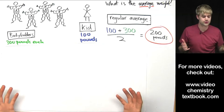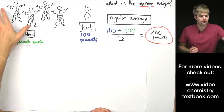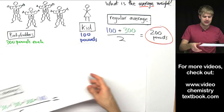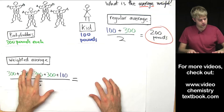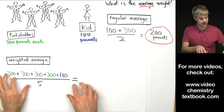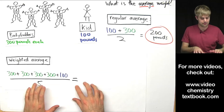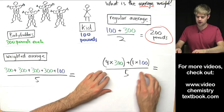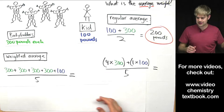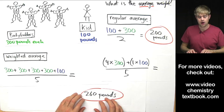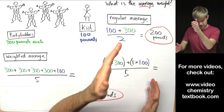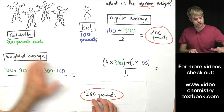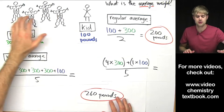The weighted average can work the other way as well. If we had four 300-pound bodybuilders and only one kid that weighed 100 pounds, we'd calculate: (4 × 300 + 1 × 100) ÷ 5 = 260. This number is a lot higher than 200 and much closer to the weight of the bodybuilders — close to 300 — because there are more bodybuilders and only one kid.